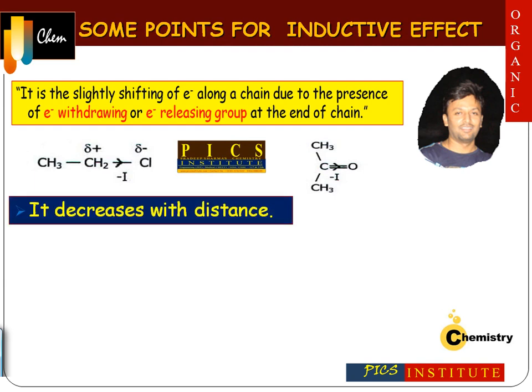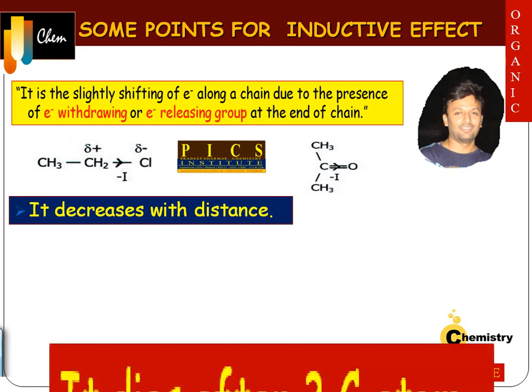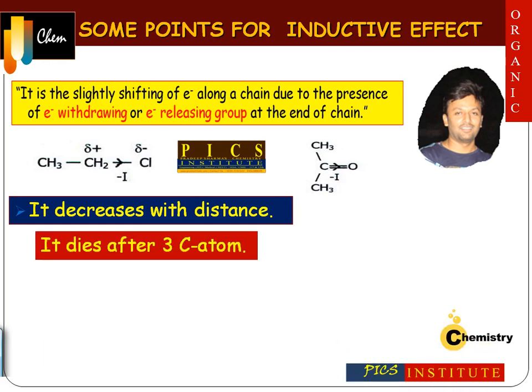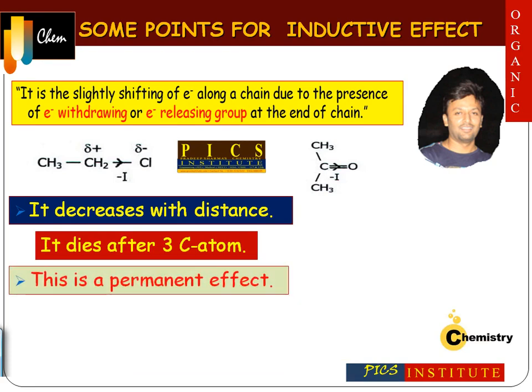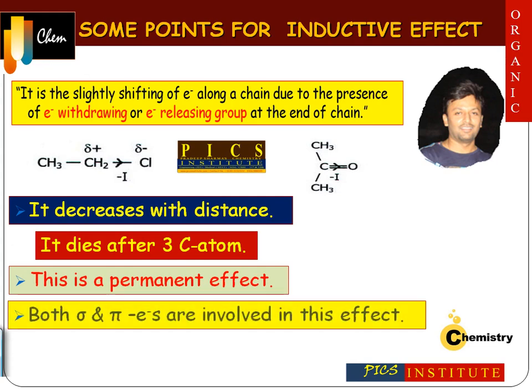We must understand a few important points regarding inductive effect. It decreases with distance — inductive effect is maximum at the first carbon, and it decreases with increasing distance, practically dying out after three carbon atoms. Inductive effect is a permanent effect, and both sigma as well as pi electrons can participate in inductive effect.